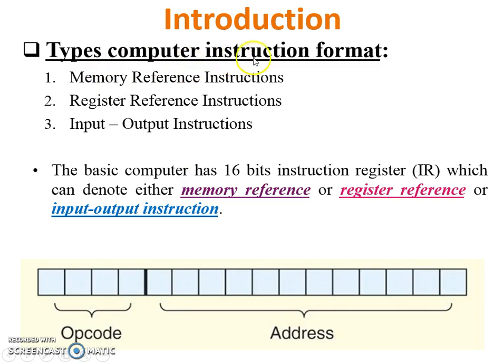There are basic three types of Computer Instruction Format. First one is Memory Reference, Register Reference, and Input-Output Instruction.